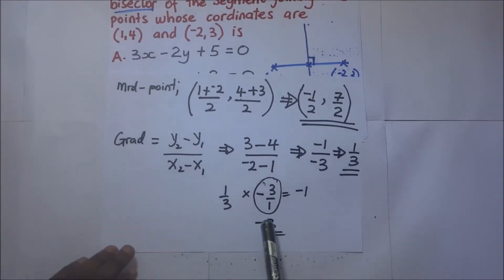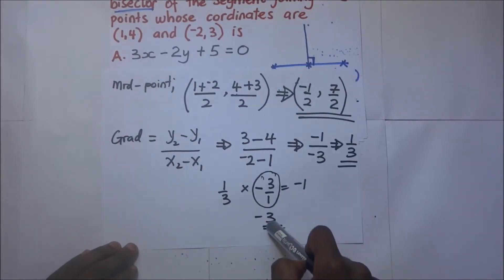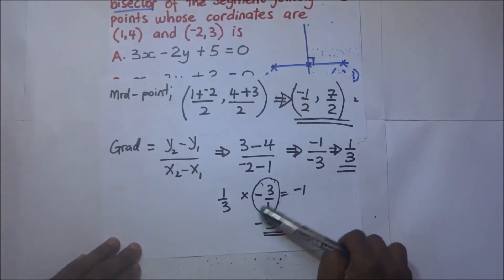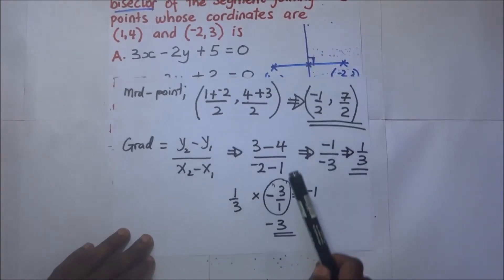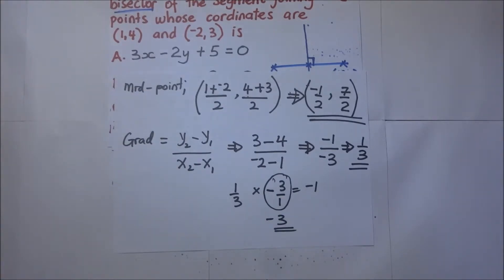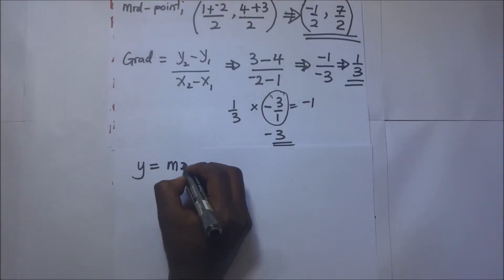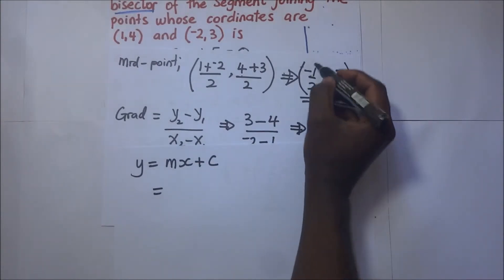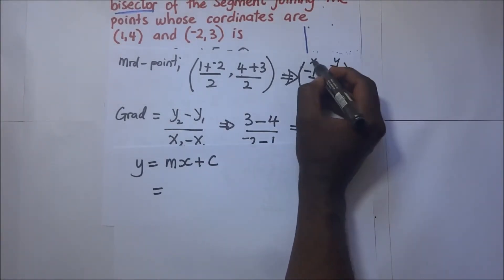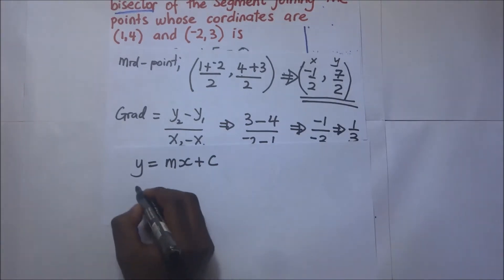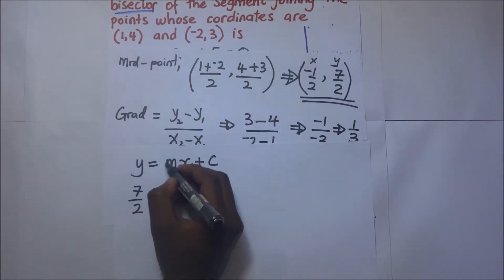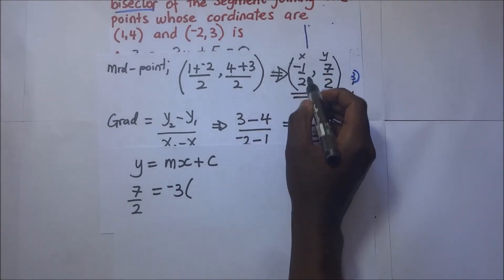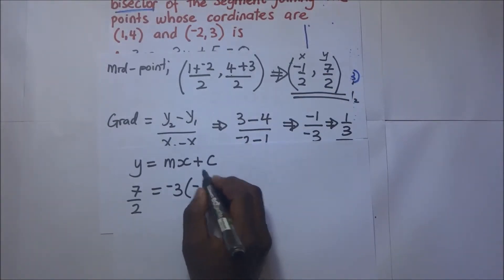We now have both the gradient of the perpendicular bisector, which is negative 3, and the point through which it passes, which is the midpoint negative 1 over 2 comma 7 over 2. Using y = mx + c, with y = 7 over 2, m = negative 3, and x = negative 1 over 2, plus c.